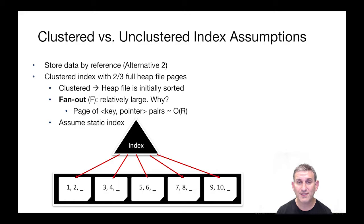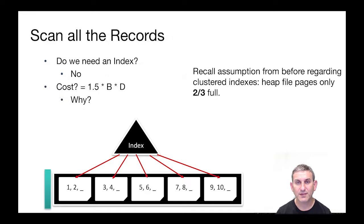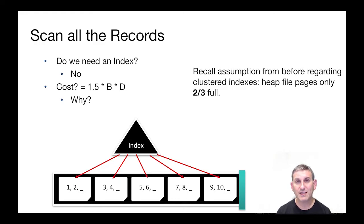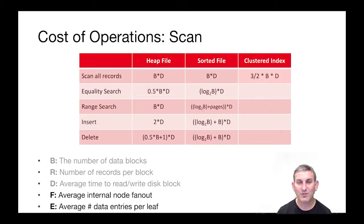For scanning all records: with a clustered alternative-two index, we don't actually need to use the index. We simply scan the associated heap file. The cost is 1.5 BD rather than BD, because the pages are only two thirds full — it takes three halves as many pages to store the same data. So our indexes are not helping here; they're actually making us slower for scanning all records.